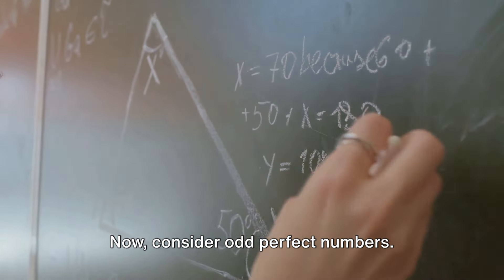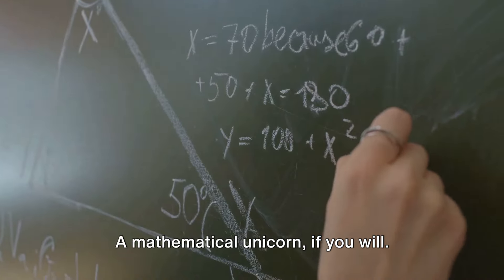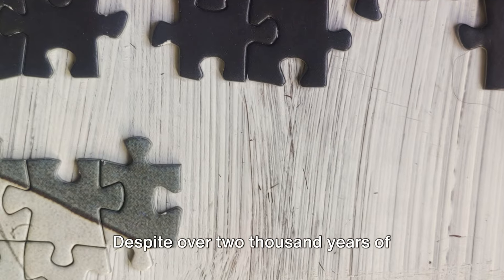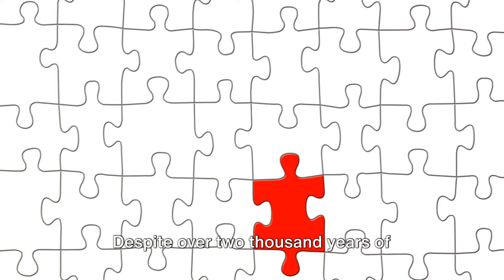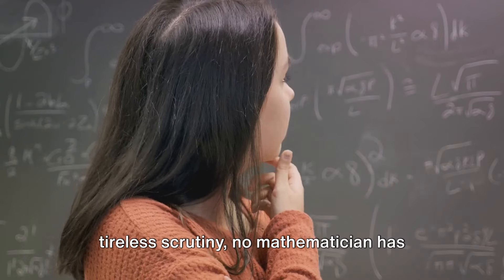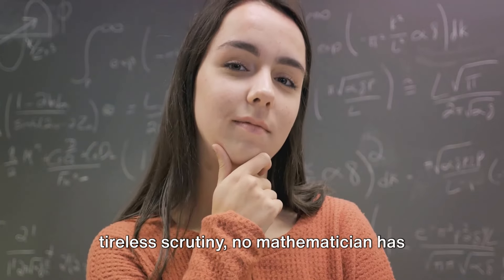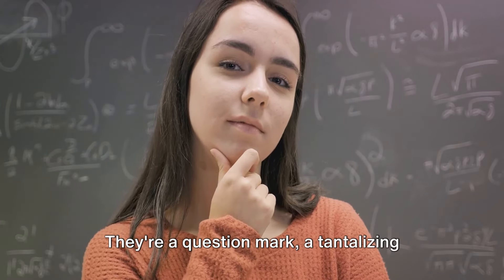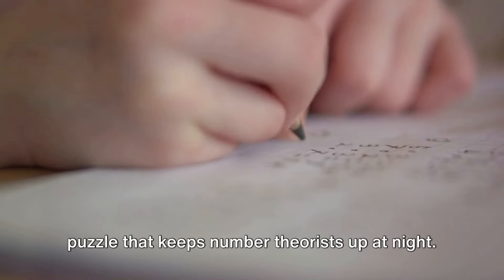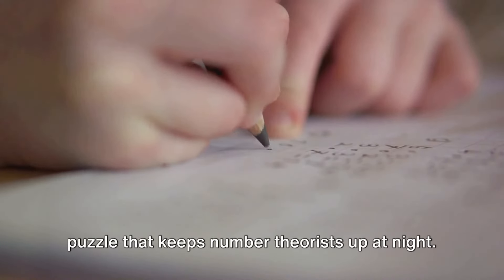Now consider odd perfect numbers. A mathematical unicorn, if you will. Despite over 2,000 years of tireless scrutiny, no mathematician has yet discovered one. They're a question mark, a tantalizing puzzle that keeps number theorists up at night.